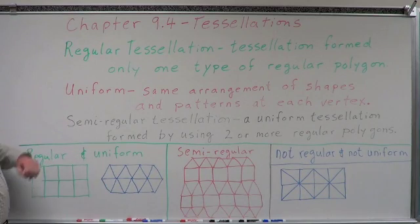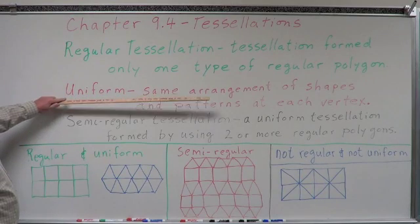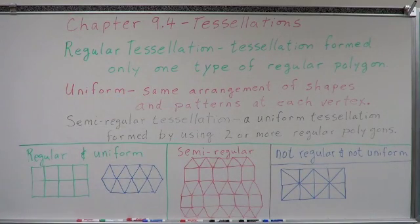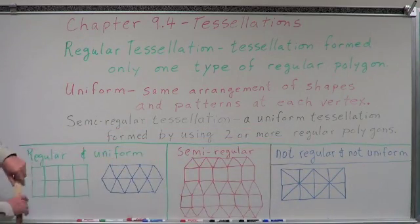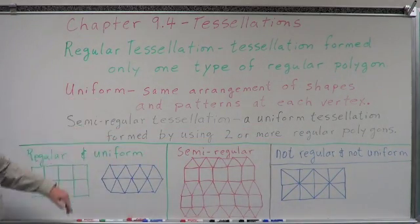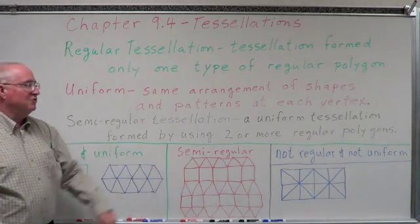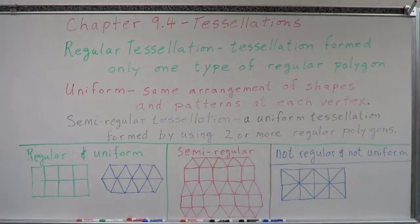The term 'uniform' applies if the same arrangement of shapes and patterns occurs at each vertex. In other words, everywhere there's a corner, it's always the same — same number of shapes, same pattern. A semi-regular tessellation is a uniform tessellation formed by using two or more regular polygons.